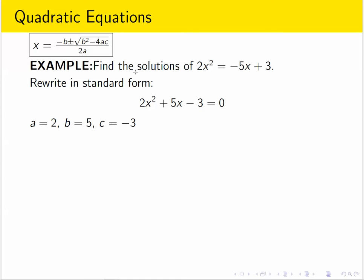In this case, the coefficients are 2, 5, and negative 3. Now we plug all of those in for the right symbols in the quadratic formula and simplify some more.